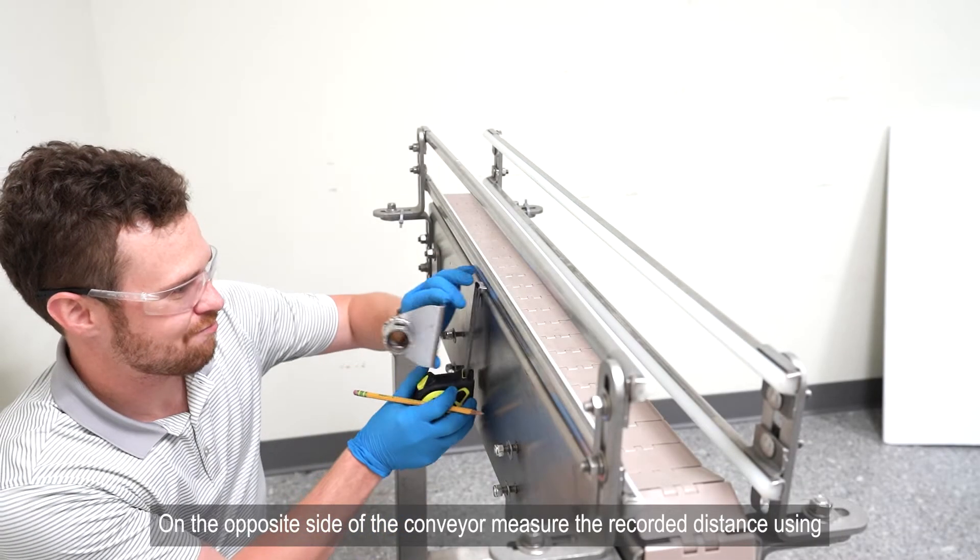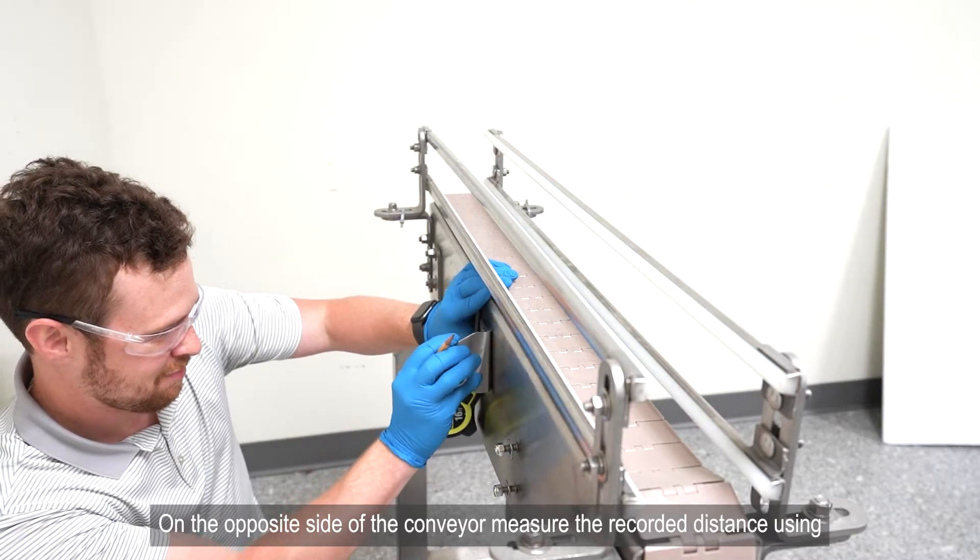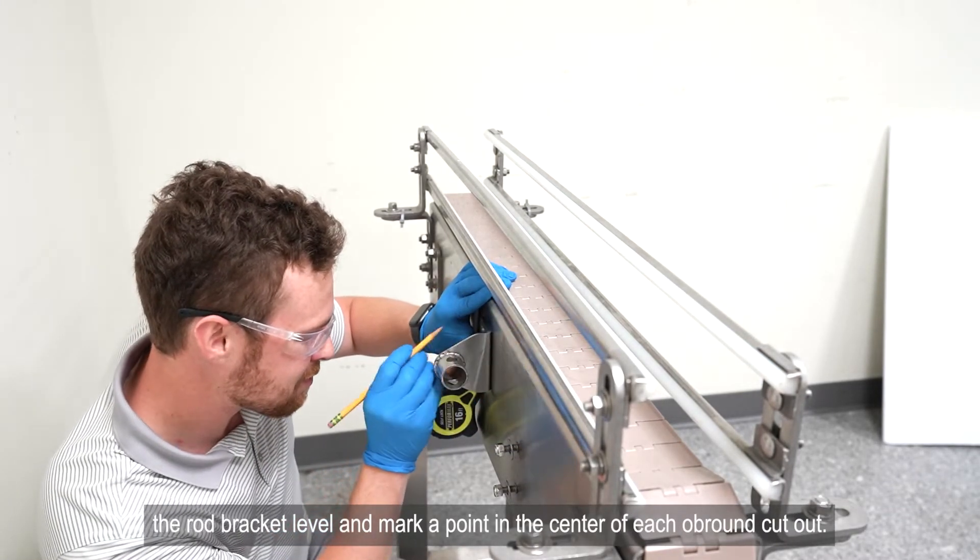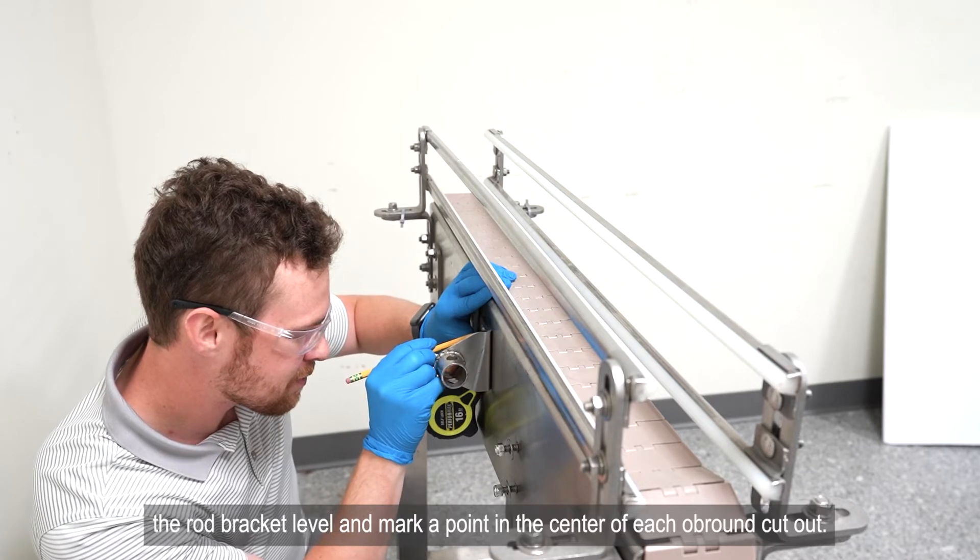On the opposite side of the conveyor, measure the recorded distance. Using the rod bracket, level and mark a point in the center of each ob-round cutout.